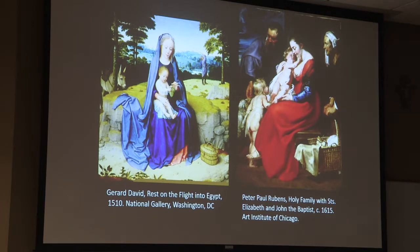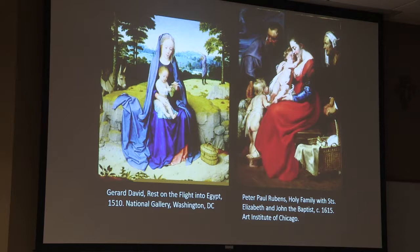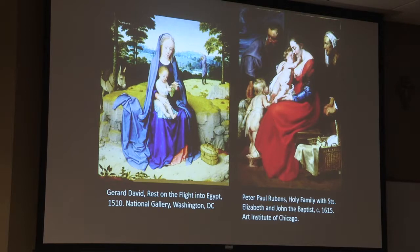The Christ child leans against a Moses basket — he is the fulfillment of the law, the new law. The lovely young John the Baptist eagerly leans in, gazing at the child, his mother, and the lamb whose foreleg rests on John's shoulder — St. Joseph pets the lamb in the background. John the Baptist, as we know, is the one who proclaims 'Behold the Lamb of God who takes away the sins of the world' — all of that is telegraphed in this absolutely charming and beautiful scene.